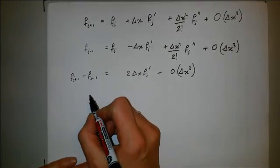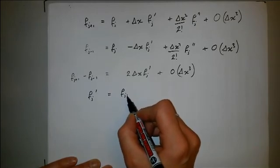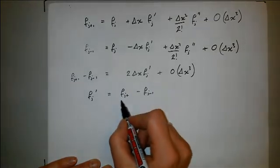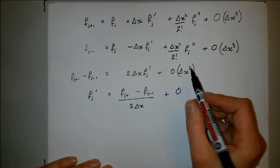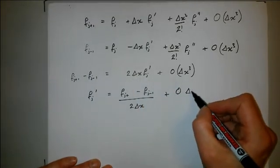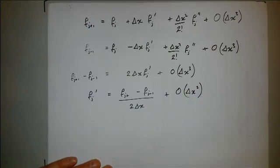So when I rearrange this to find f'_j, f'_j is equal to f_{j+1} minus f_{j-1}, took the 2 delta x over to the other side, plus order, so now I divide this by delta x, so that goes to order delta x squared, and the constant of proportionality changes.